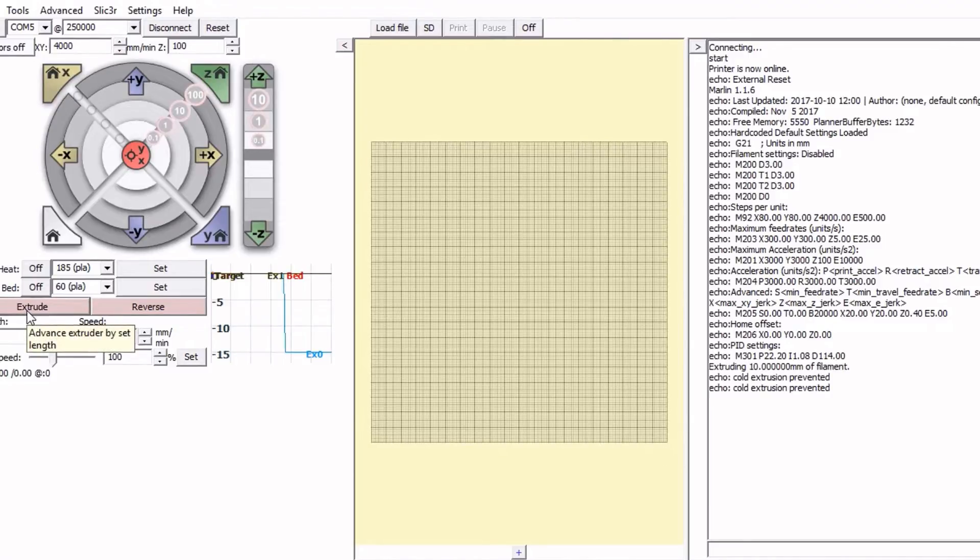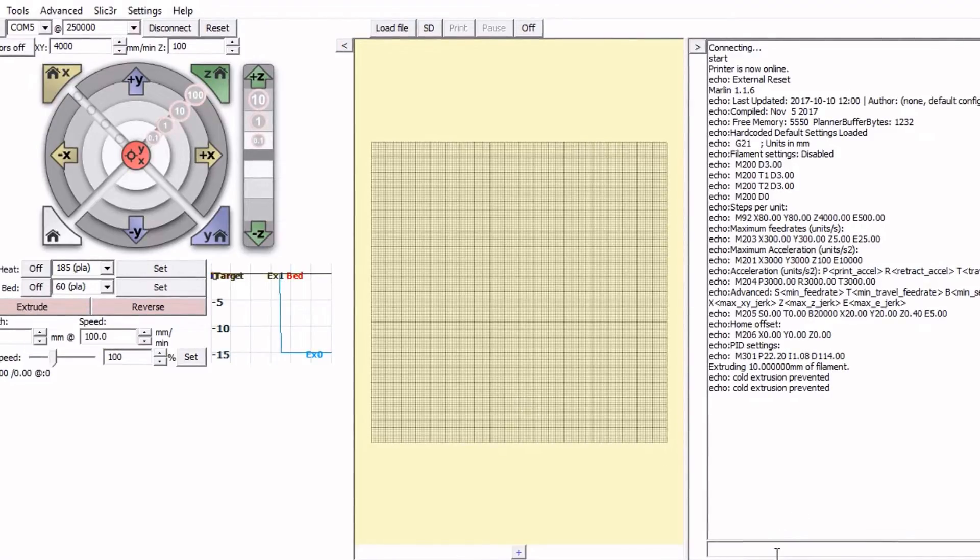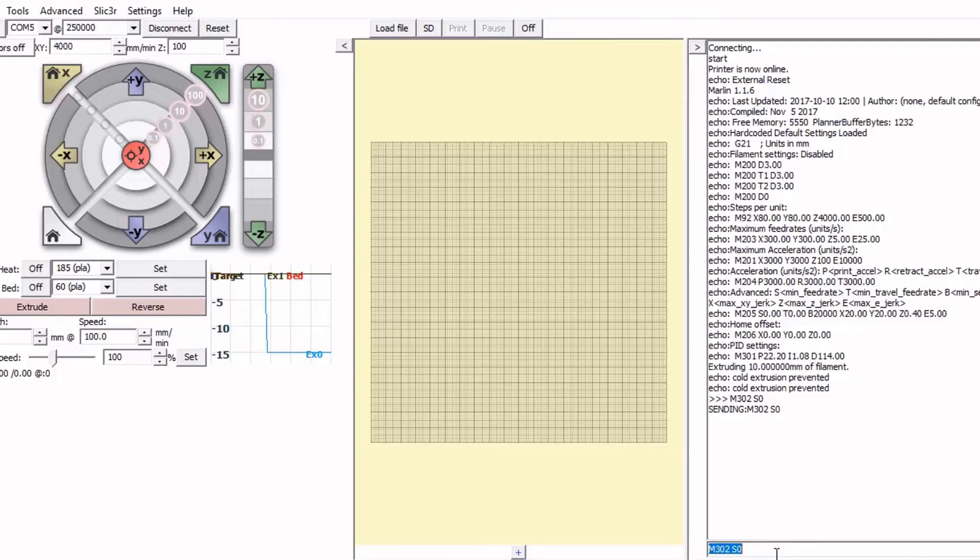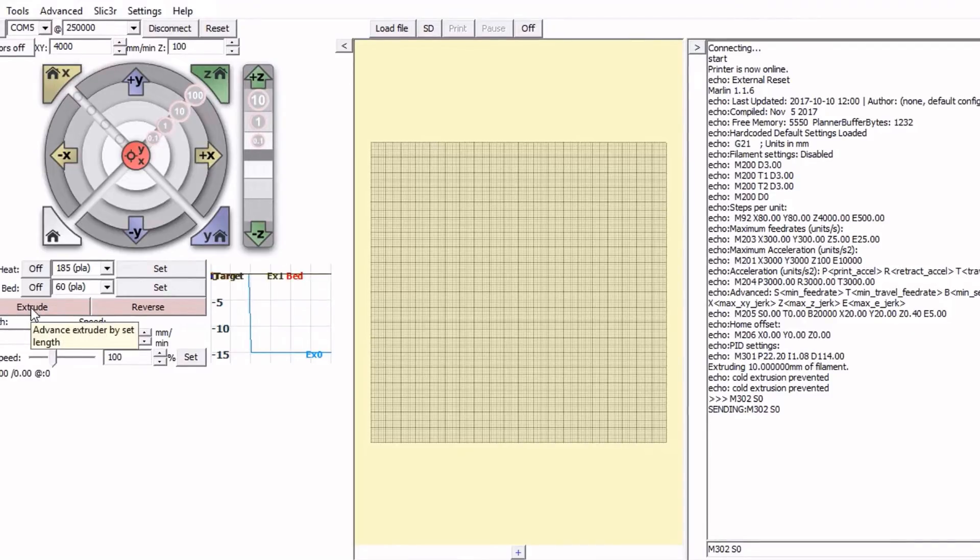Now we can't extrude normally because if we hit extrude it says it's cold, so you have to put in M302S0. That changes the temperature to zero so you don't have to worry about cold extrusion. And we want to change the length to 100 that way we can measure it to see what the difference is.